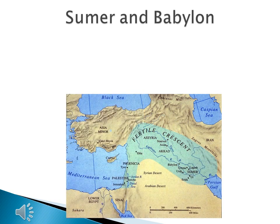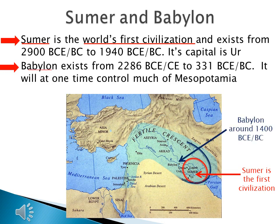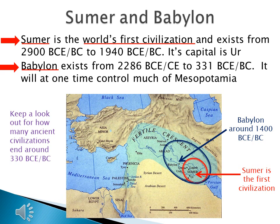Mesopotamia and the Fertile Crescent are where we find our first civilizations. Sumer is the world's first civilization, existing from 2900 BCE to about 1940 BCE. Its capital is Ur, located in the eastern part of the Fertile Crescent, right where the Tigris and Euphrates rivers come together and flow into the Persian Gulf. The other major Mesopotamian civilization is Babylon, which exists from 2286 BCE to 331 BCE, and will at one time control much of Mesopotamia. As we go through our ancient civilizations, keep track of how many of these places end at the same time.